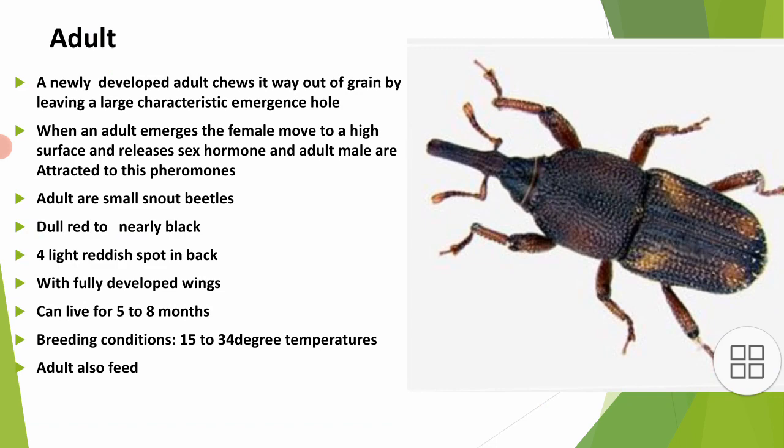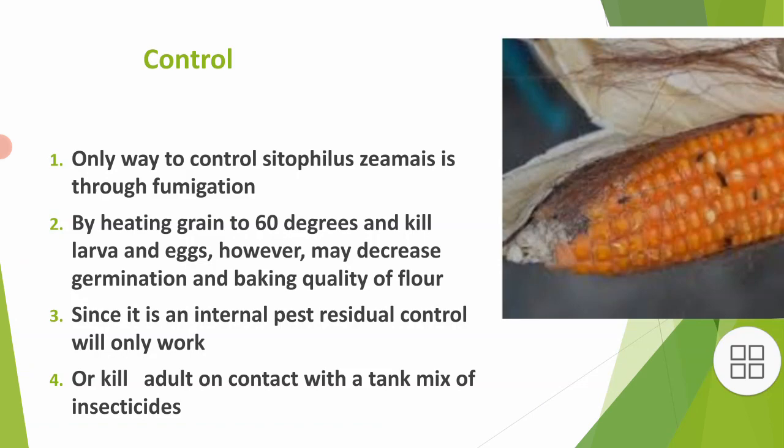Breeding conditions: a temperature of 15 to 34 degrees Celsius is favorable for breeding. Adults also feed like larvae. The only way to control Sitophilus zeamais is through fumigation — a process done by heating grain to 60 degrees Celsius to kill larvae and eggs. However, this may decrease germination and baking quality of the flour.